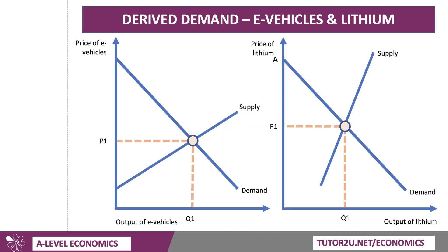Oftentimes with a derived demand question, you might use a double diagram. On the left-hand side, we have the demand for the final product — e-vehicles. And on the right-hand side, we have the demand and supply of the intermediate input — the price of lithium.